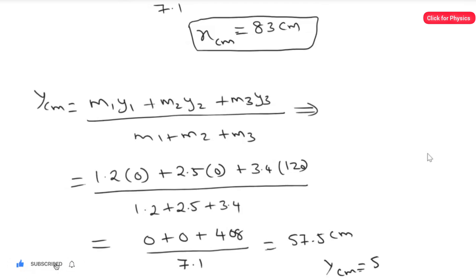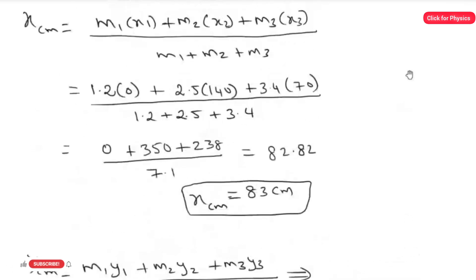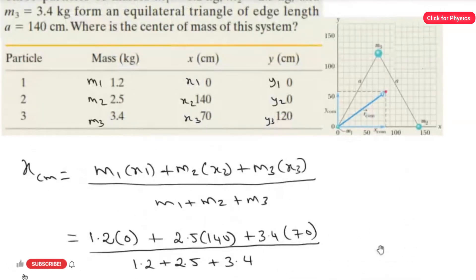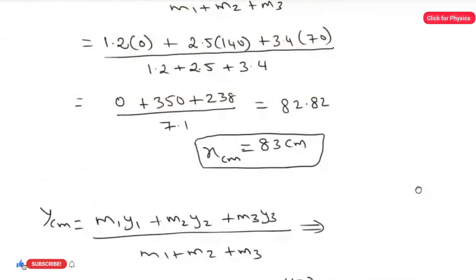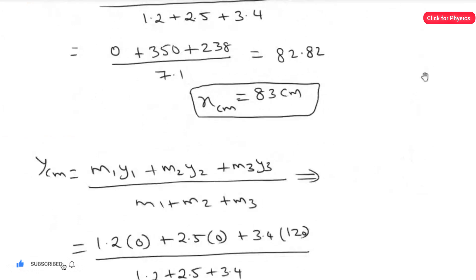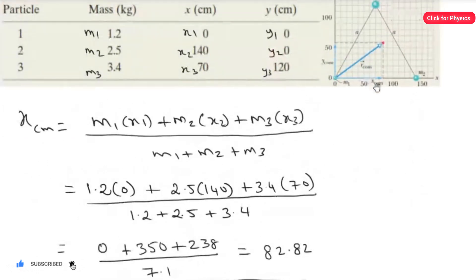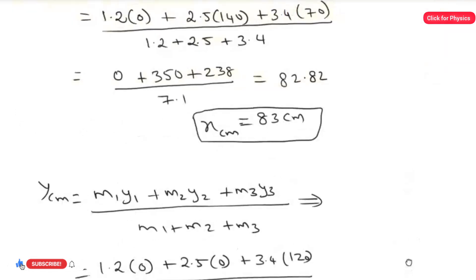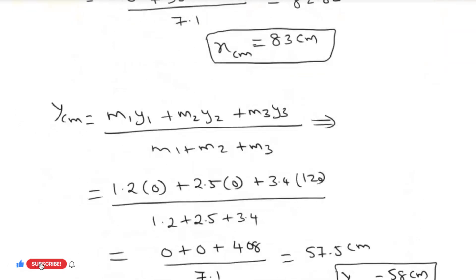Going back to the graph, the point is fixed where x = 83 and y center of mass = 58. You can see the x value is close to 83 and the y value is close to 58, confirming our calculated center of mass point. That's the answer for this question.